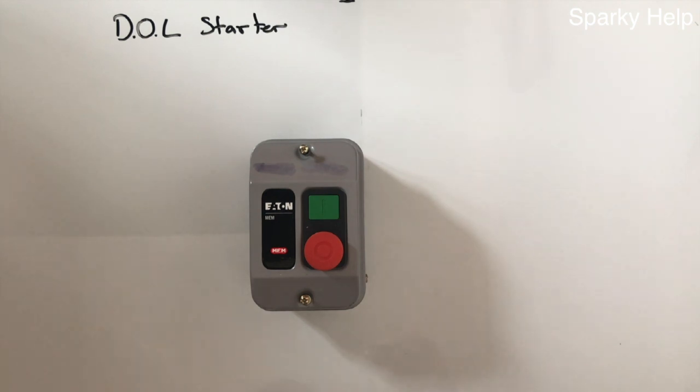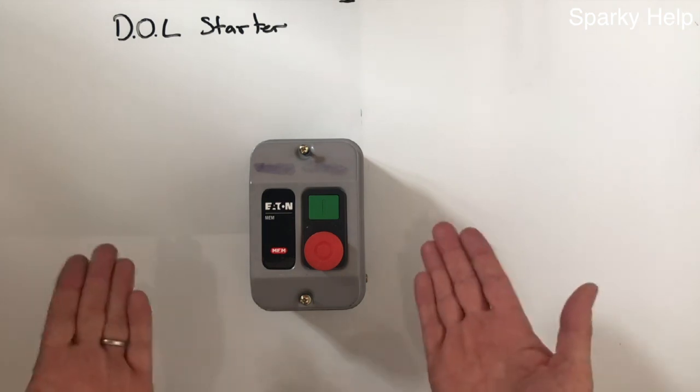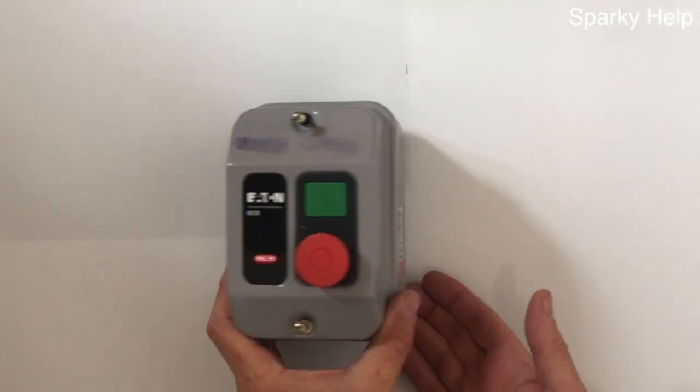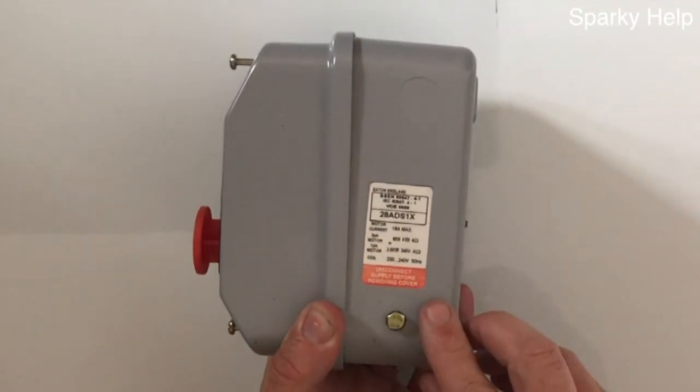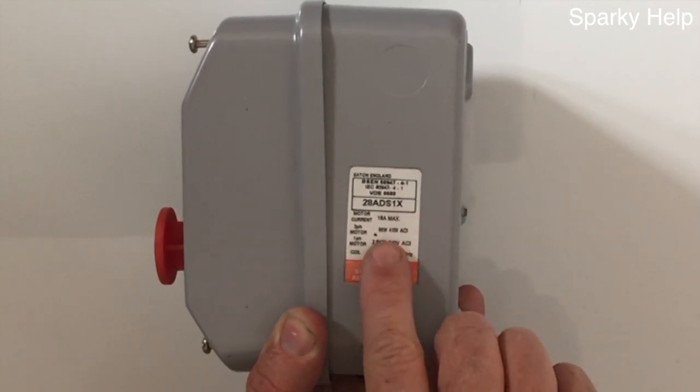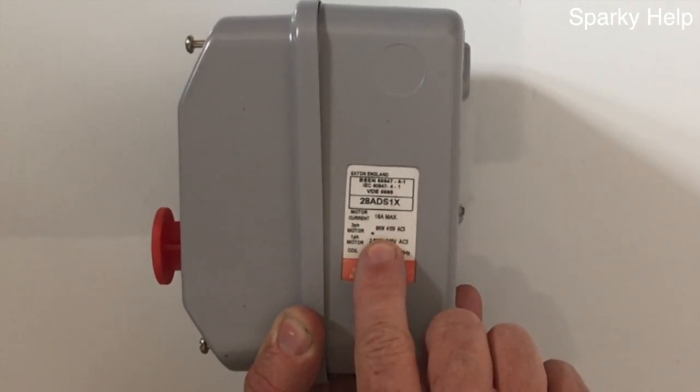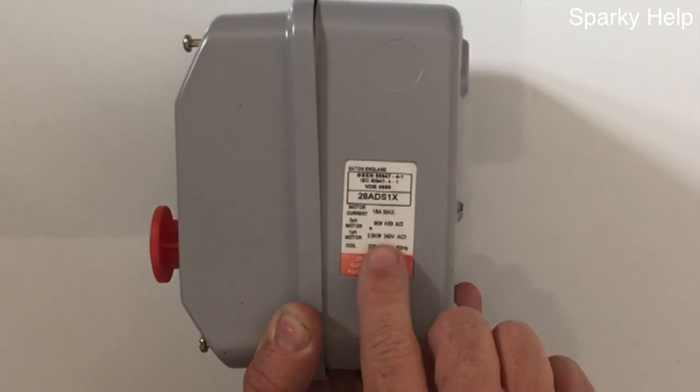It's called Direct Online Starter made simple. So there's the starter which you can buy, one particular brand. On the side it will tell you what the current rating is and in horsepower what the kilowatt will be for each motor.